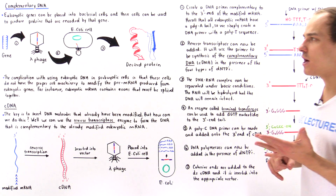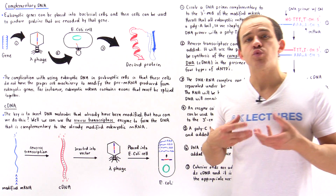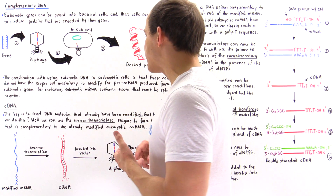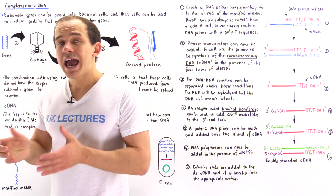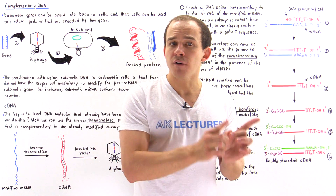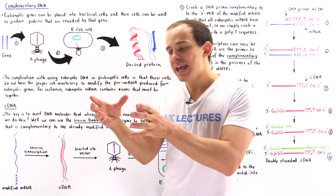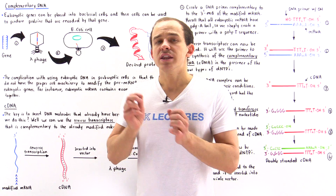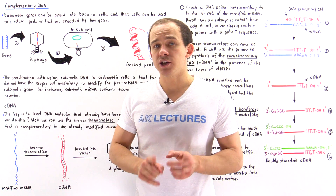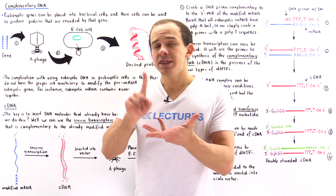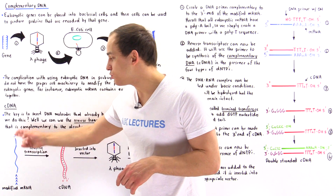How do we solve this problem? We solve it by using an enzyme found in retroviruses known as reverse transcriptase. This enzyme reverse transcribes — it forms a complementary DNA molecule from an mRNA molecule. The way we solve the problem is we take the eukaryotic cell that produces the proteins we want to extract, and we extract the fully modified mRNA molecule that contains the poly-A tail, the 5' cap, and only the exons, not the introns.